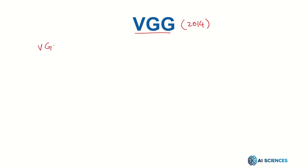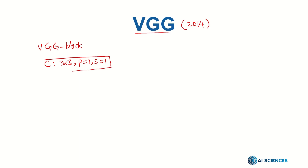A VGG block basically consists of a convolutional layer — normally a three by three convolutional layer with padding equal to one and stride always equal to one. The three by three filter with padding one always keeps the original dimensions of the input tensor.